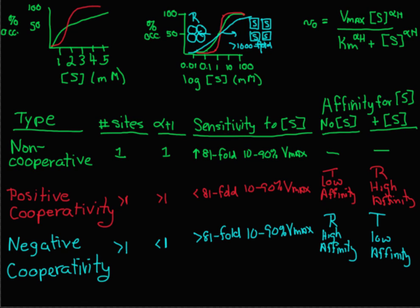Just remember: you need more than one site for cooperativity. Positive cooperativity increases the sensitivity to substrate and increases the affinity for the substrate. Negative cooperativity decreases the sensitivity to substrate and decreases the affinity.